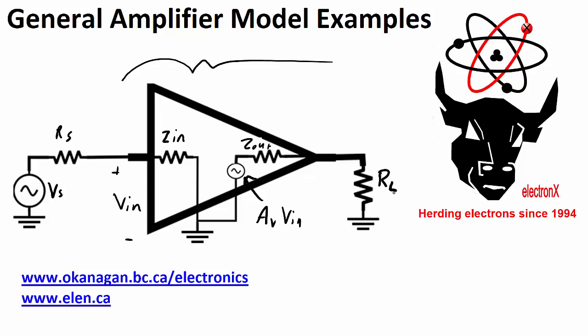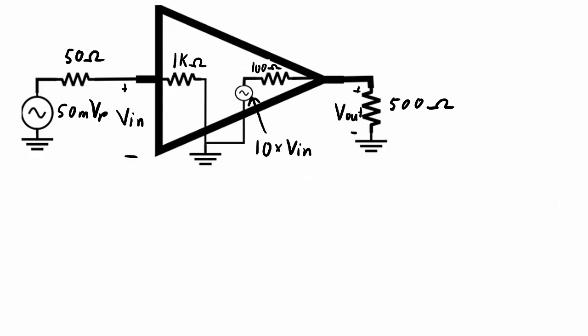The output of that general amplifier will be connected to some load. Here is my example: my amplifier model has a 1 kilohm input impedance, a 100 ohm output impedance, and the voltage gain is 10 times, so AV equals 10. The internal voltage source is 10 times whatever voltage gets applied at the input. What is applied at the input is a 50 millivolt peak sine wave coming out of a source through the 50 ohm output impedance of the source. The output of the amplifier goes through a 500 ohm output load, and the goal is to figure out what the output voltage would be.